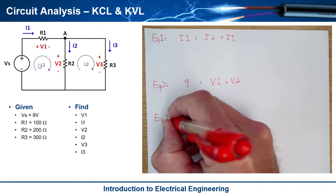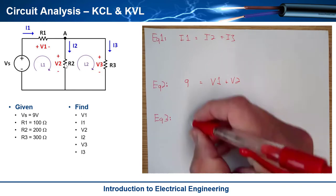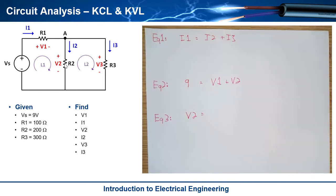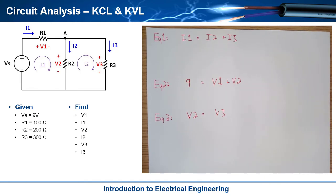Equation 3 is KVL around Loop 2, also clockwise. Starting at the bottom node: V2 goes from minus to plus — a rise. Then V3 goes from plus to minus — a drop. So Equation 3 is: V2 = V3. You could have seen this by inspection since those nodes are directly connected.